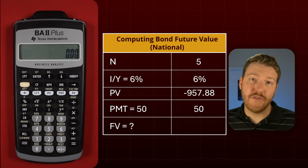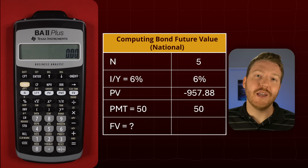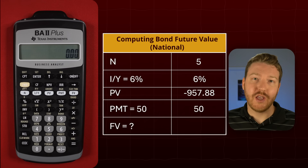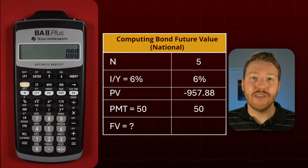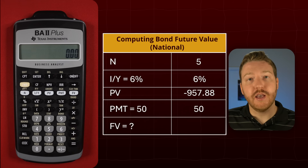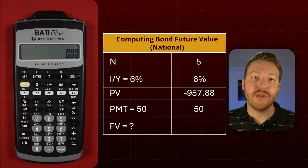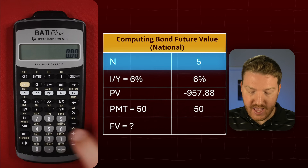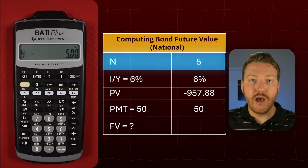Now let's calculate the future value of a bond using the BA2 Plus financial calculator. Let's assume that this bond only has a five-year life. So we'll do the number of years: N is five. Five, then N.